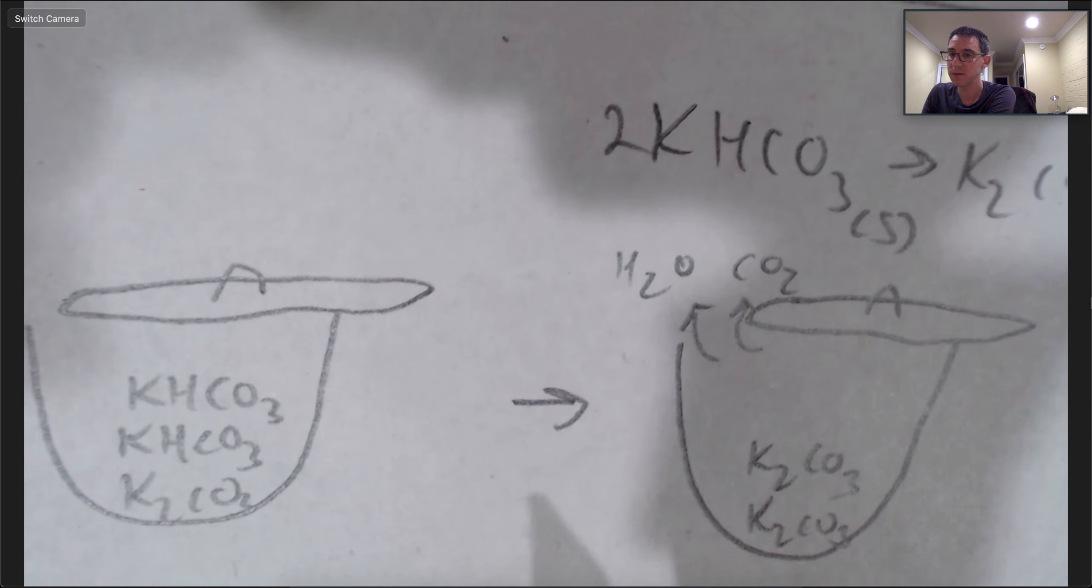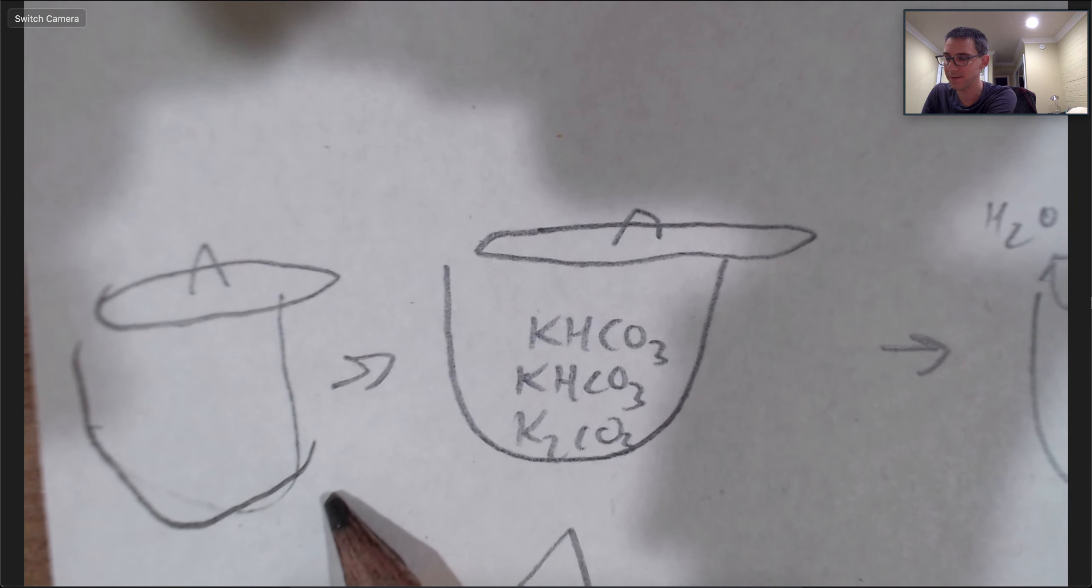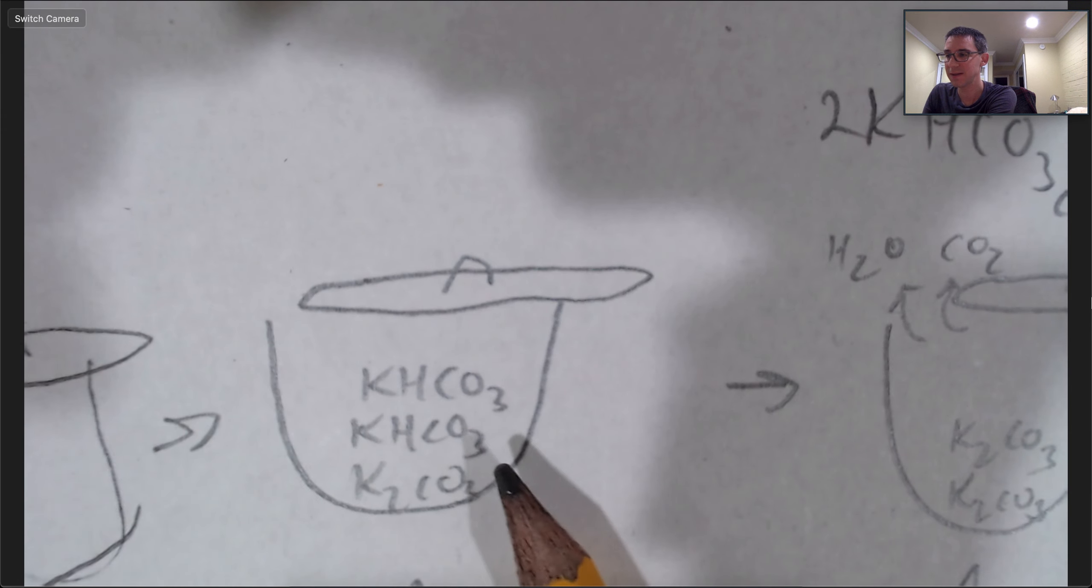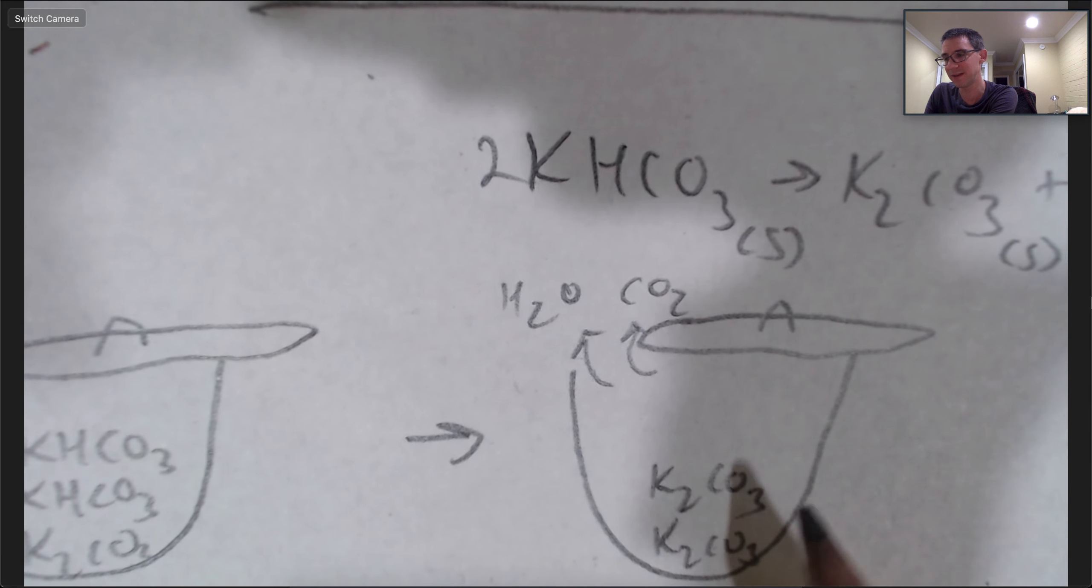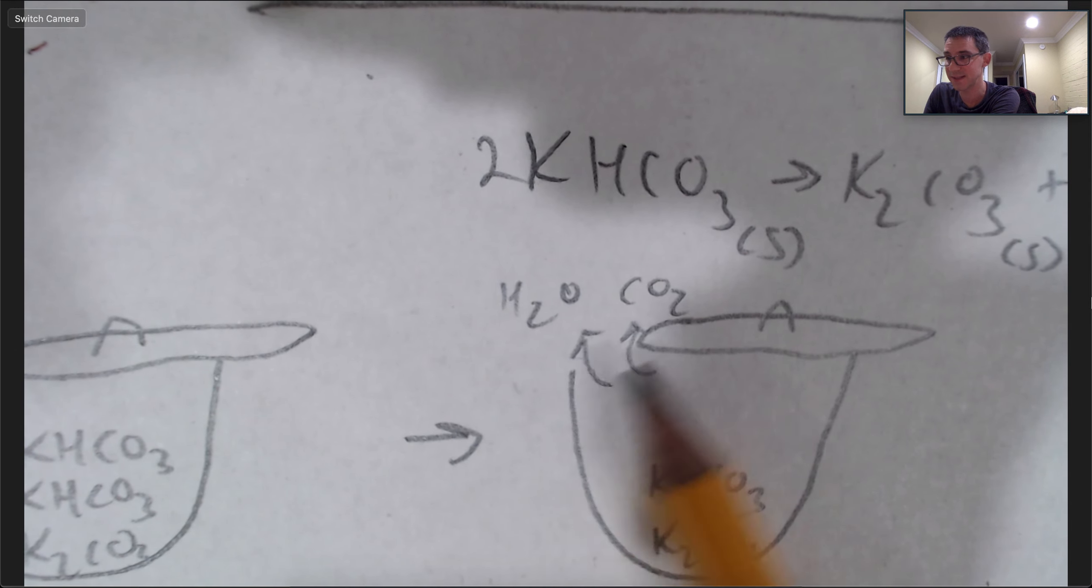So if you had the mass of the crucible with lid and the crucible with lid and the original mixture and the crucible and lid and the final potassium carbonate, you could determine how many grams of gases were lost.